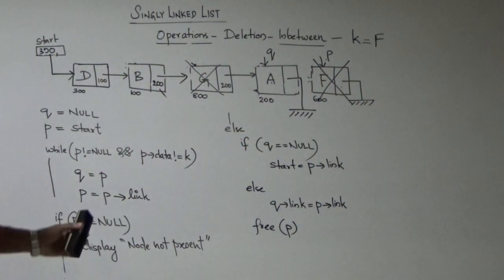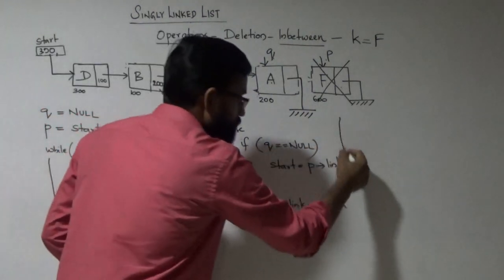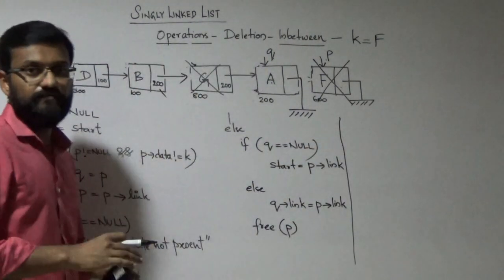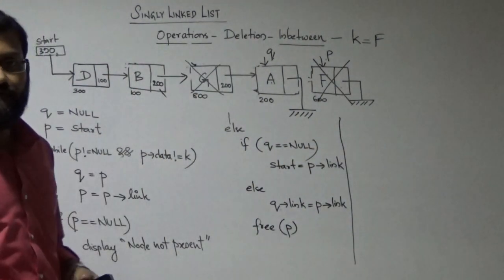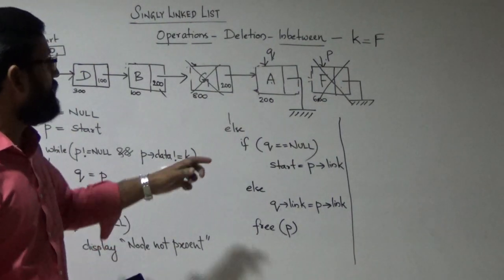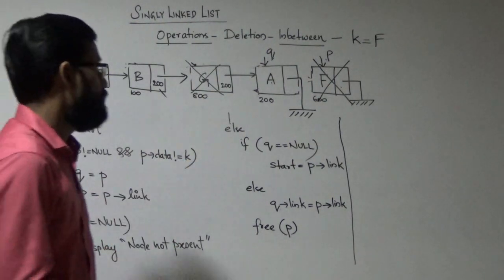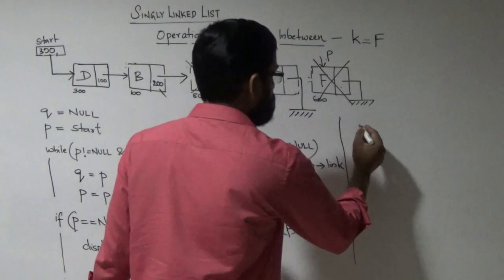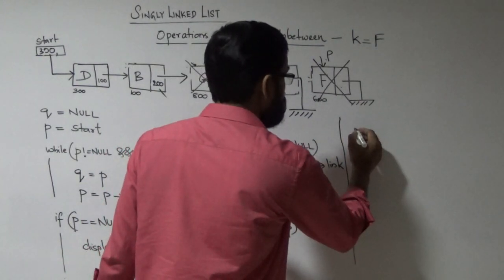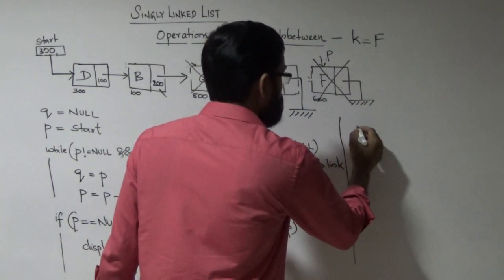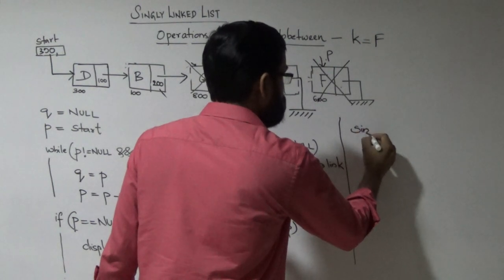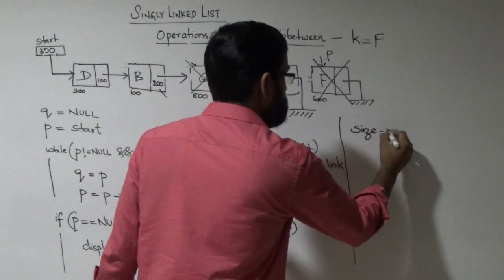This is the complete deletion algorithm — try working out a few examples to become comfortable implementing this deletion operation. Now for the analysis: what is the runtime of performing a deletion operation in a singly linked list of size N? In the worst case, the node to be deleted is the last node or the second-to-last node, so you may have to visit N nodes.